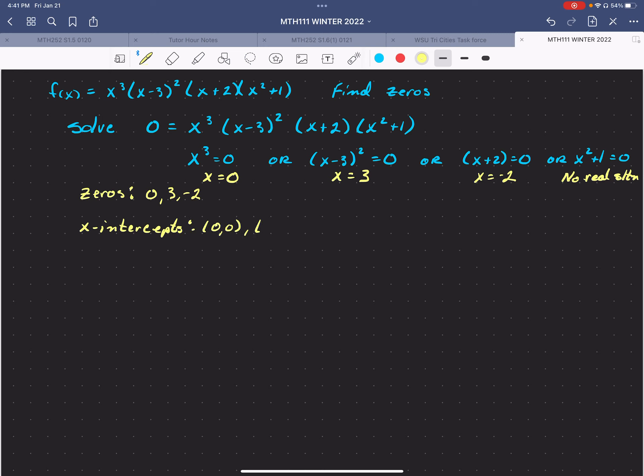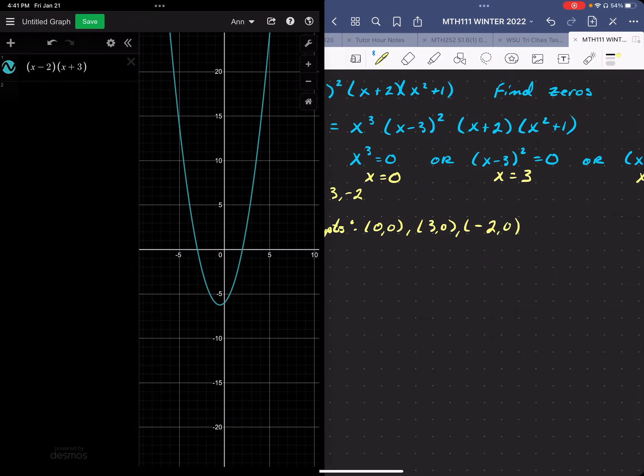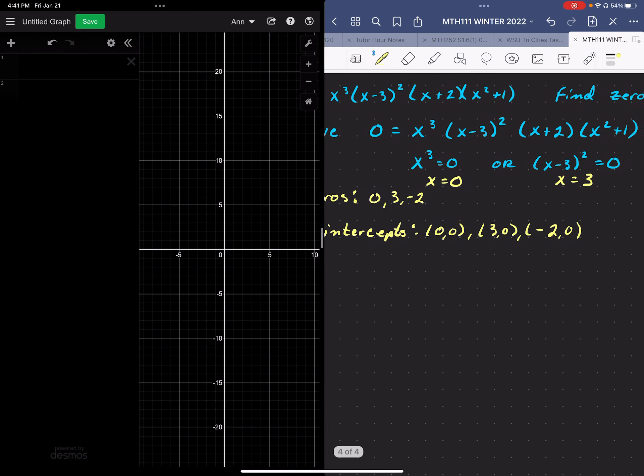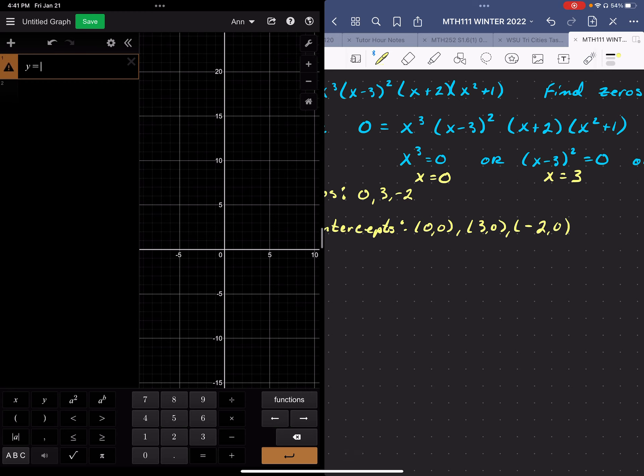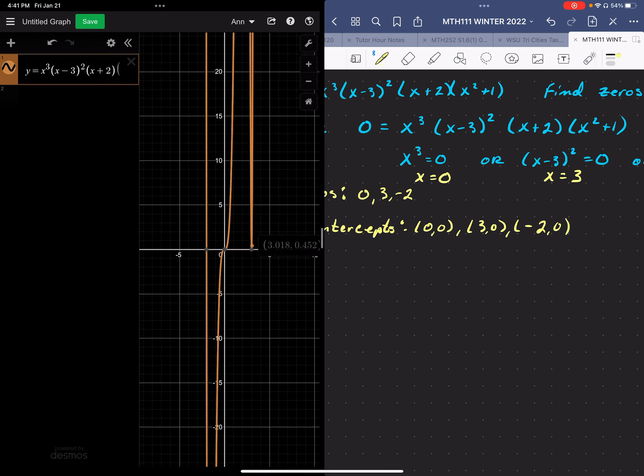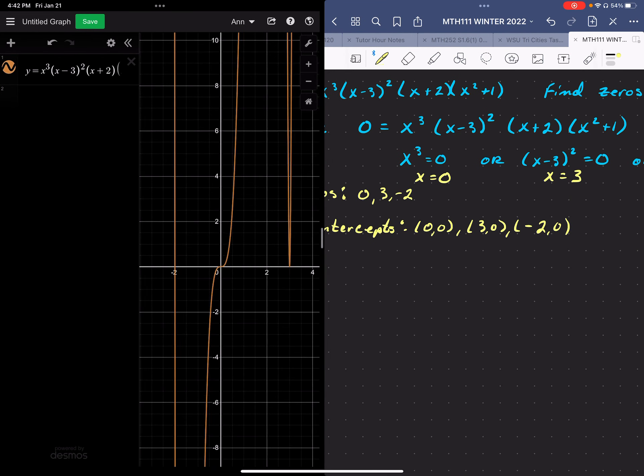0, 0, 3, 0, and negative 2, 0 are my x-intercepts. So let's take a look at this graph. So I want to graph y equals x to the third times x minus 3 squared times x plus 2 times x squared. And I think, according to the work I just did,